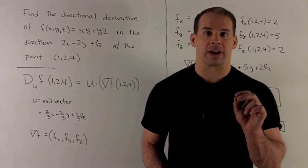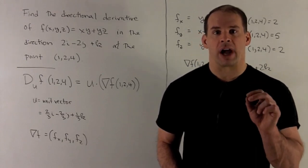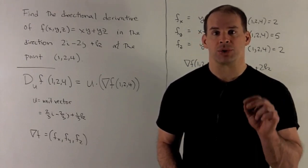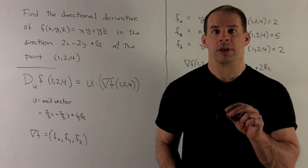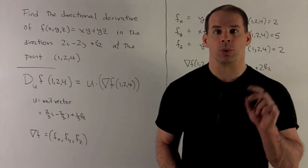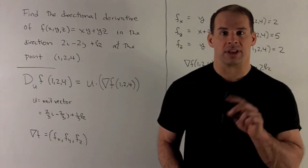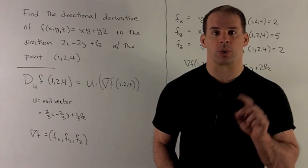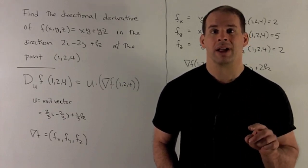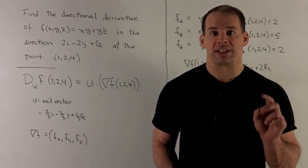First, the unit vector. We're given the direction 2i minus 2j plus k, so that's (2, -2, 1). Its length is going to be the square root of 2 squared plus 2 squared plus 1, that's 3, so that's not a unit vector.